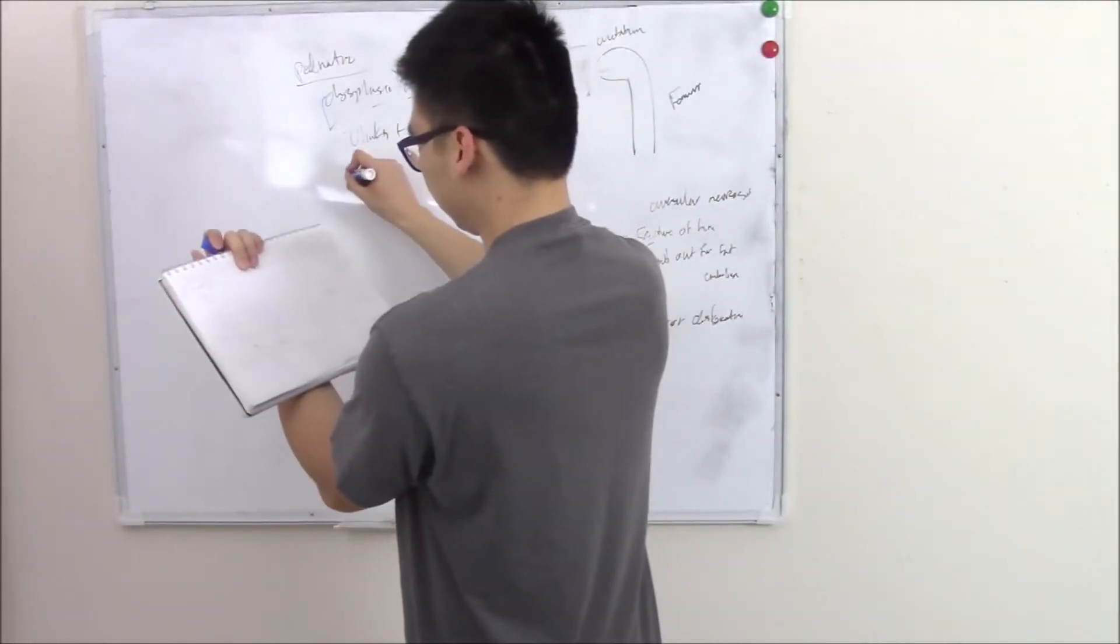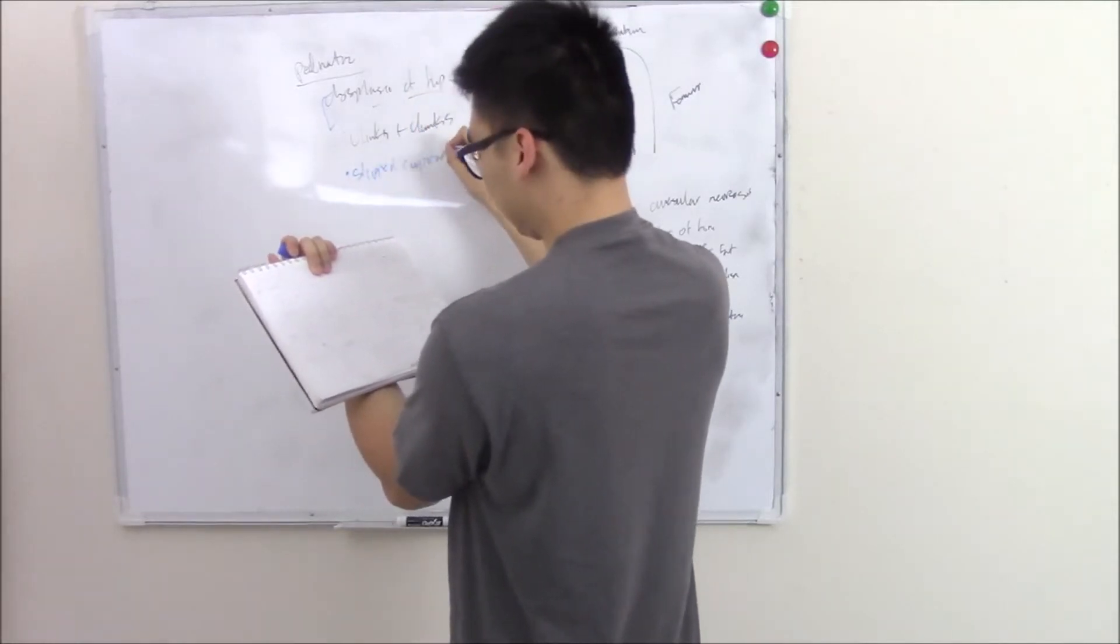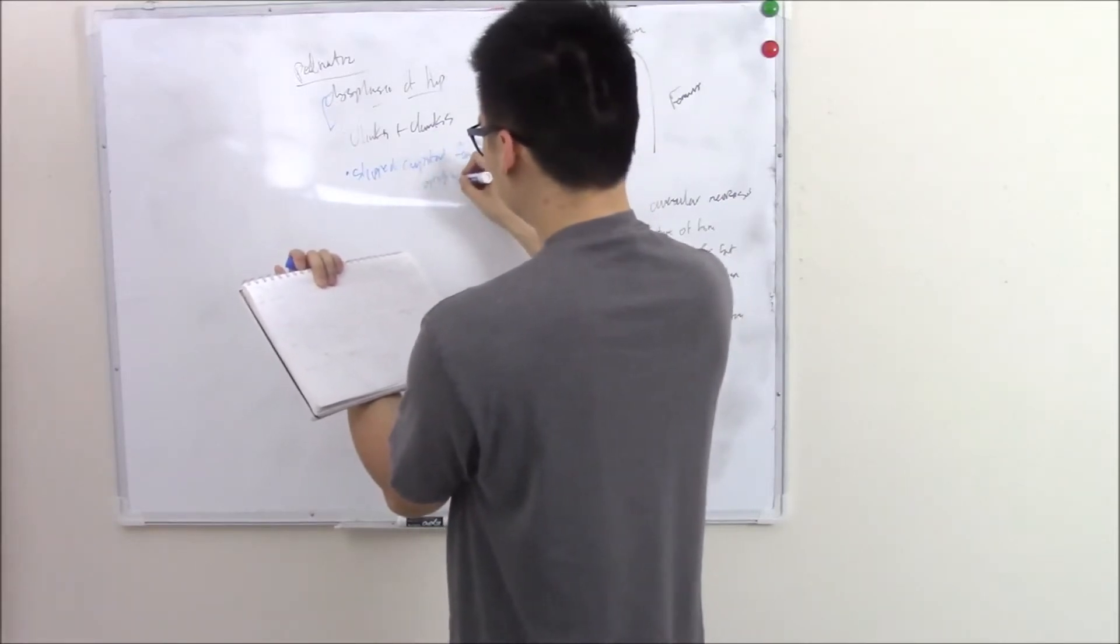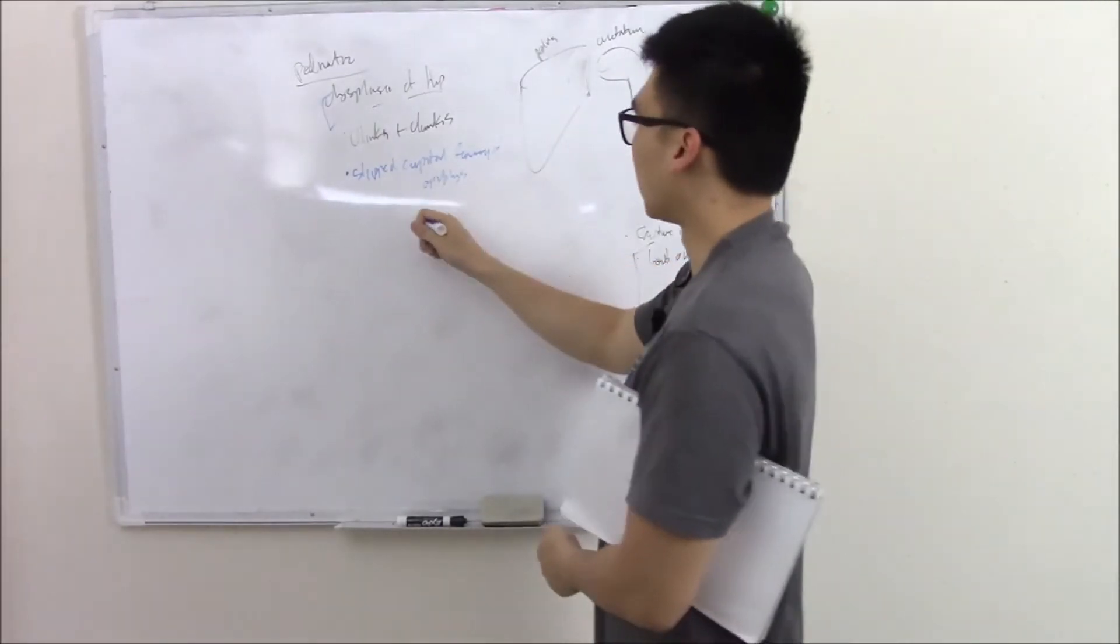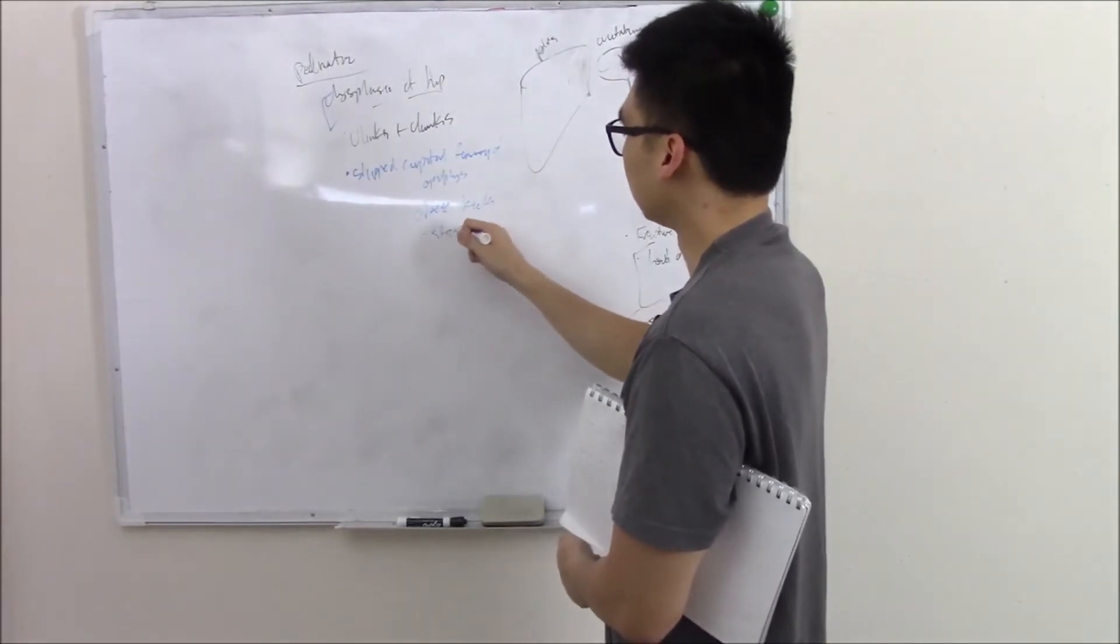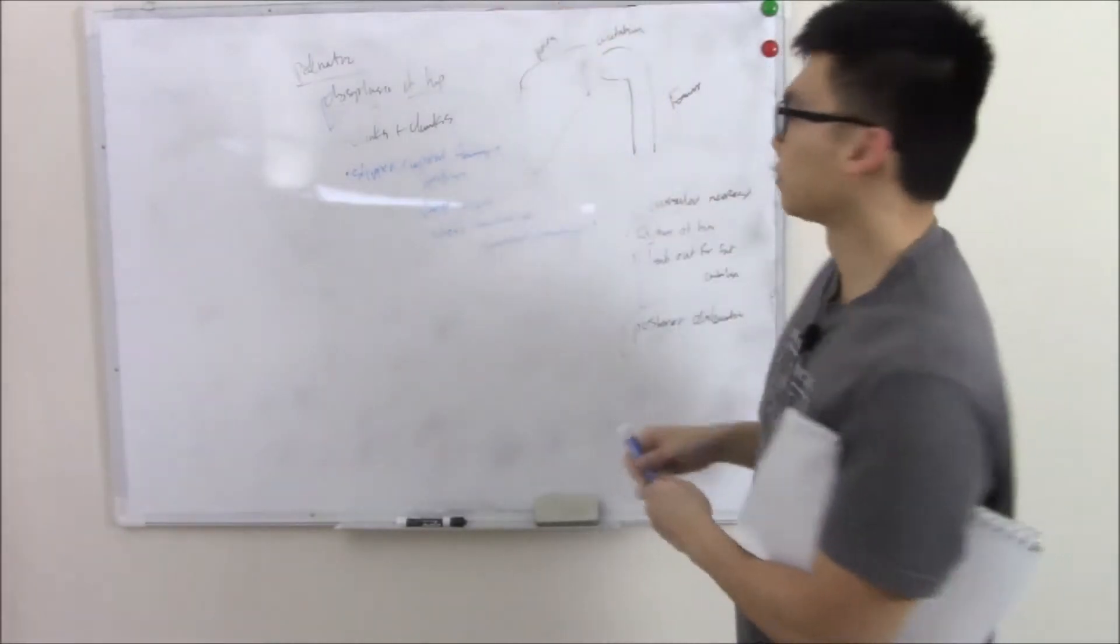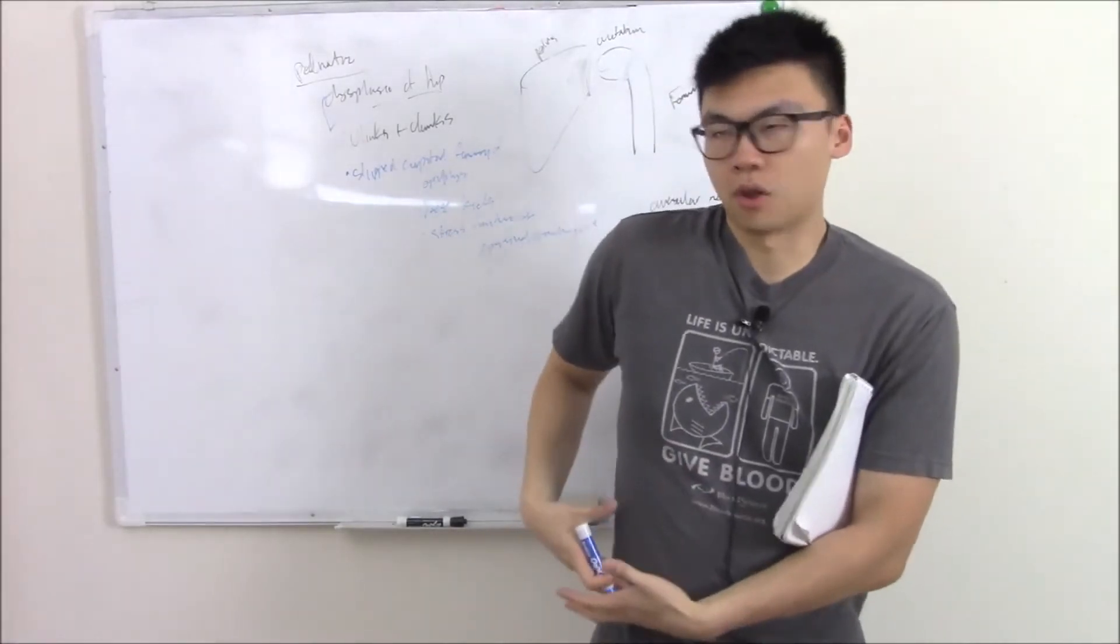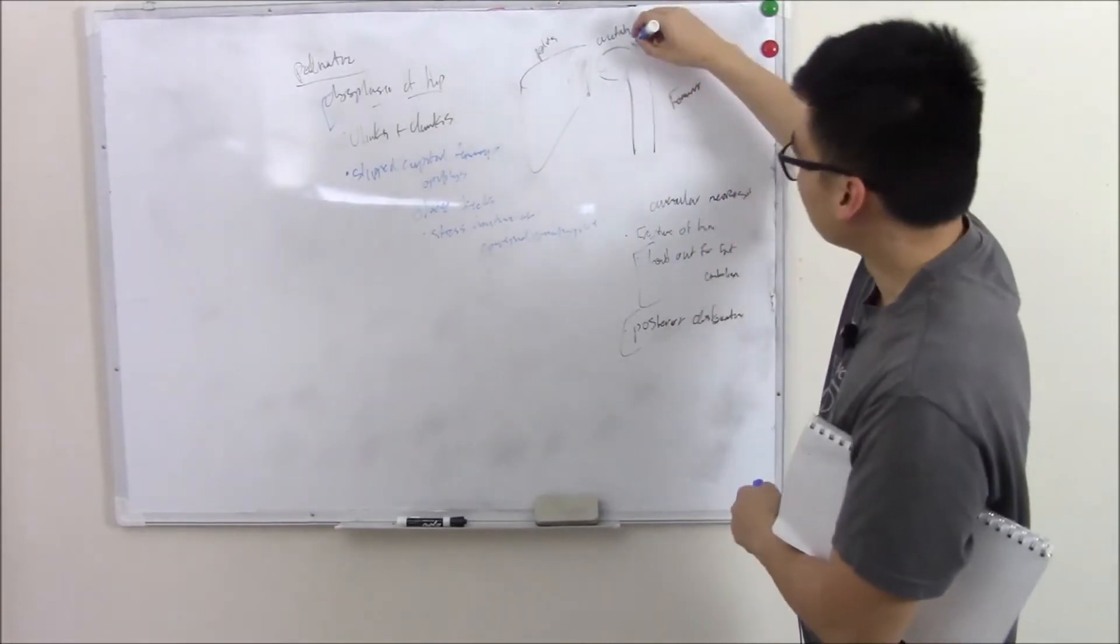You can also have something called slipped capital femoral epiphysis. This is often seen in overweight or obese kids and it's a stress fracture. Just by looking at the femur, the femur isn't a straight bone, it comes in at an angle. And this is your epiphyseal growth plate. If you're an overweight kid, you put a lot of stress on that epiphyseal growth plate, that angle.